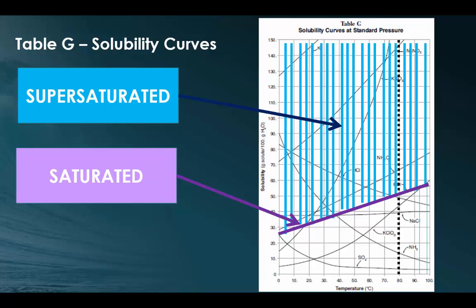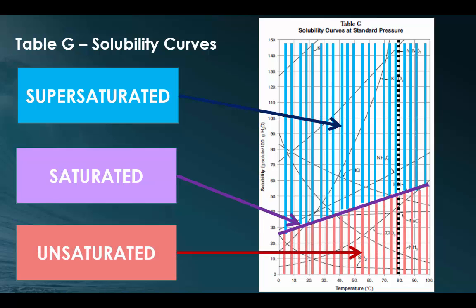But what happens if you're below the saturated line? What do we call that type of solution? So anything below, in the example of 80 degrees Celsius, it should be approximately 50 to 52 grams of KCl that can be actually saturated in it. If it's below that, then it's going to be unsaturated, meaning we can actually fit more into our solution than what was actually there.